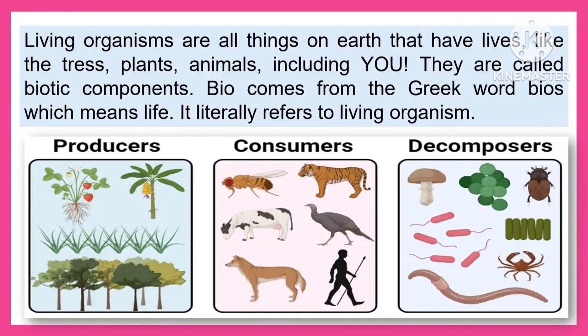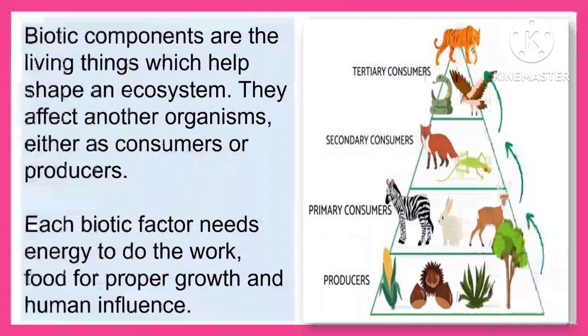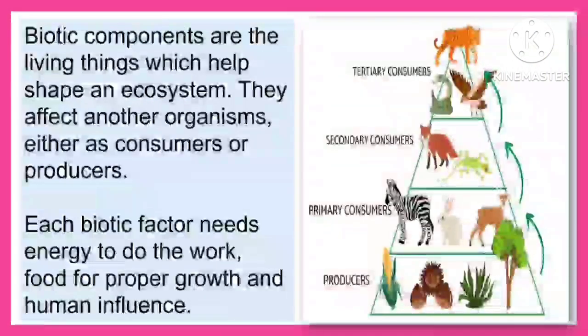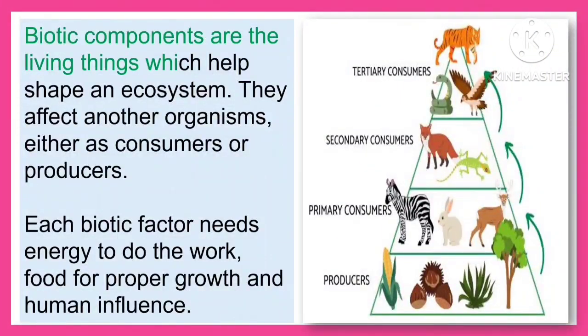Living organisms are all things on earth that have lives, like the trees, plants, animals, including you. They are called biotic components. Bio comes from the Greek word bios which means life. It literally refers to living organisms. Biotic components are the living things which help shape an ecosystem.